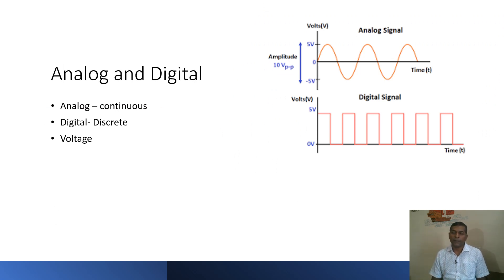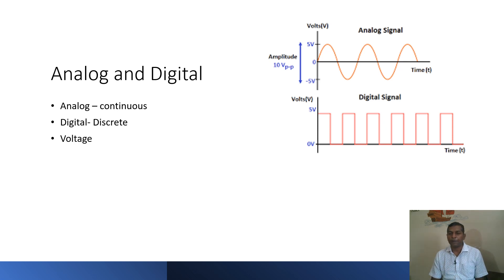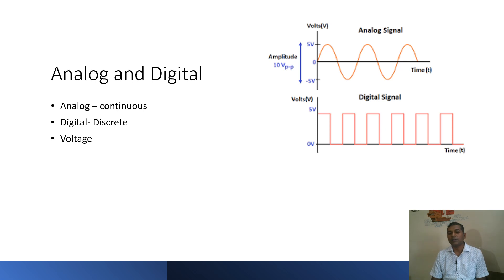First is analog and digital. Whenever we have some current or voltage, we will understand it in the form of analog and digital. These are two different types of voltage representation. In analog, we have a continuous change in voltage — a continuous flow of voltage throughout the timing when we communicate.